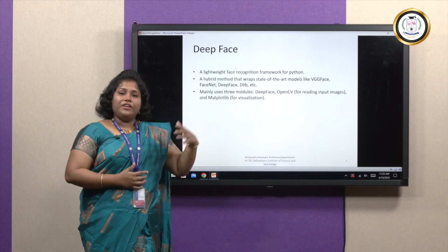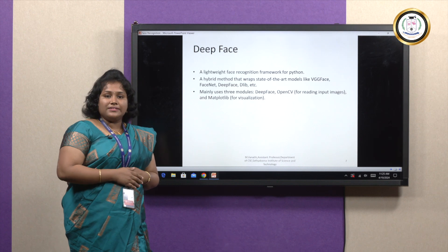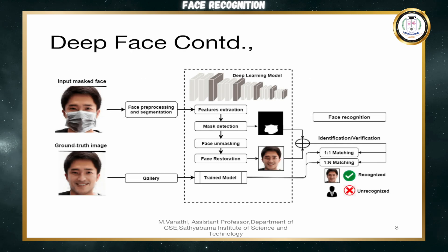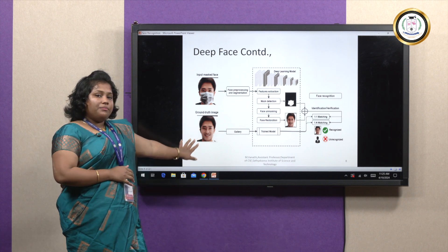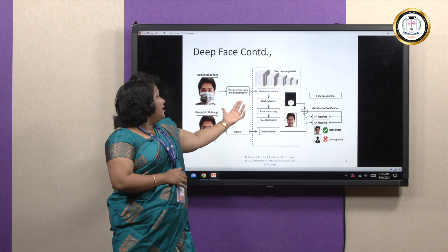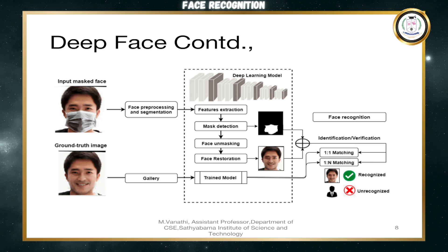Here is the main framework from Python, called the state-of-the-art step. There are three modules we are going to use: DeepFace, OpenCV, and Matplotlib. This is the architecture of how DeepFace works. First, we give the input face of the person wearing a mask, and the gallery image from our database. The masked person's image is given into face processing and segmentation, then it moves on to feature extraction. Feature extraction extracts the local features — eyes, forehead, and eyebrow length.